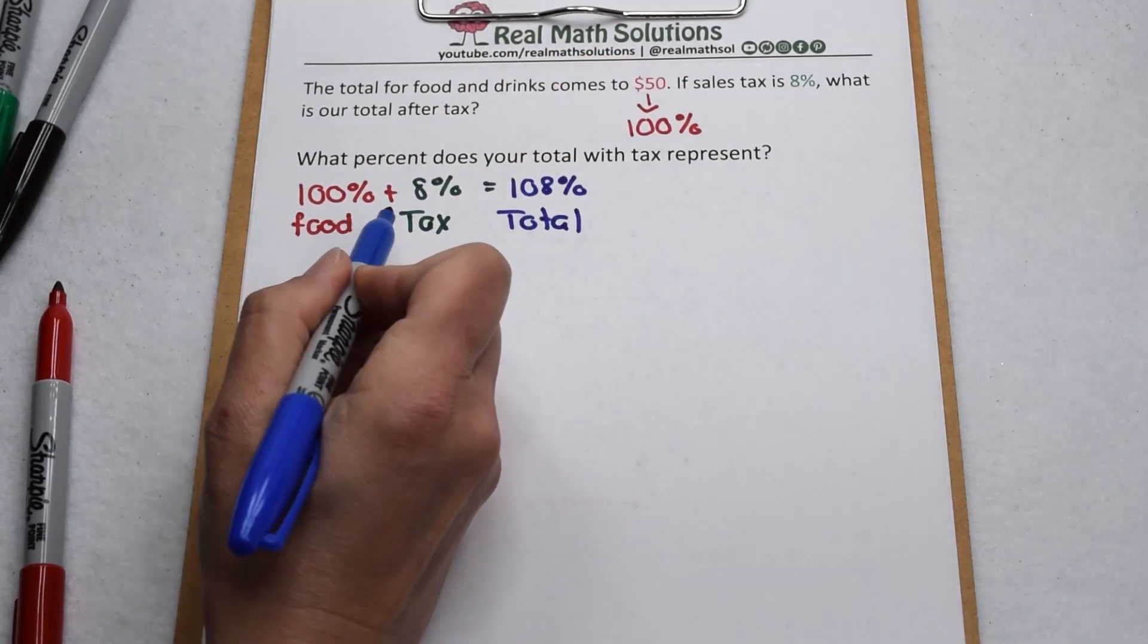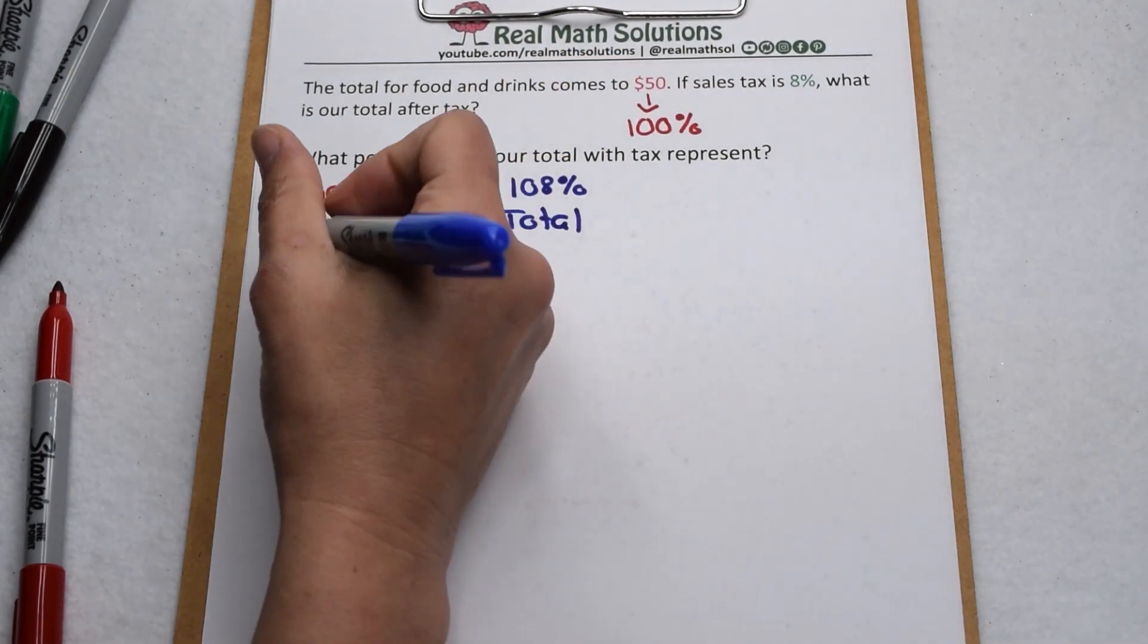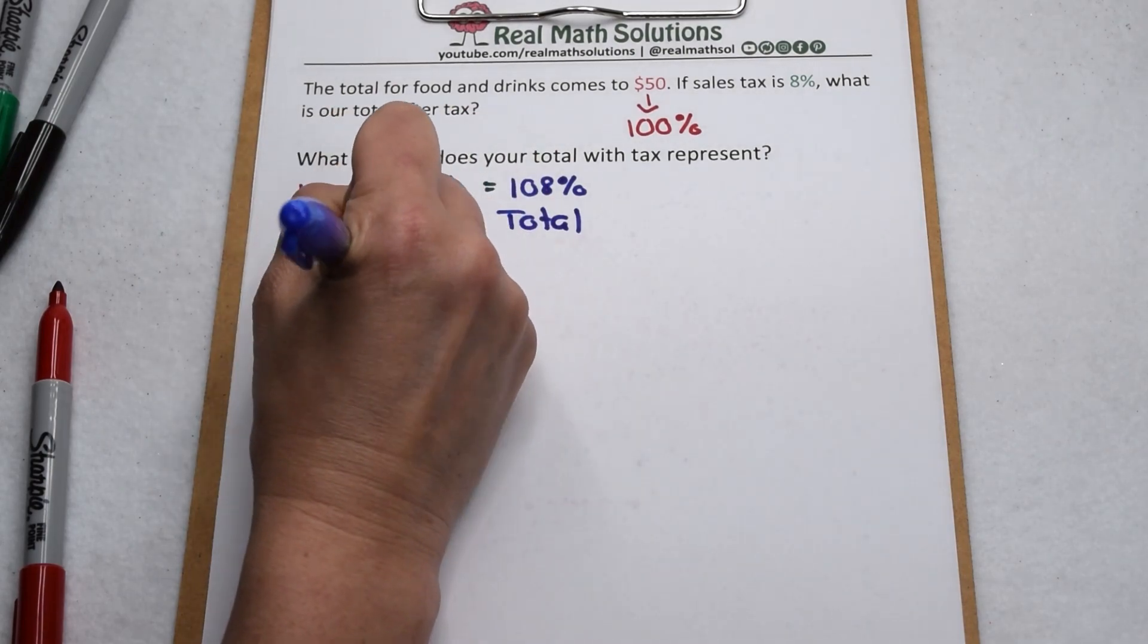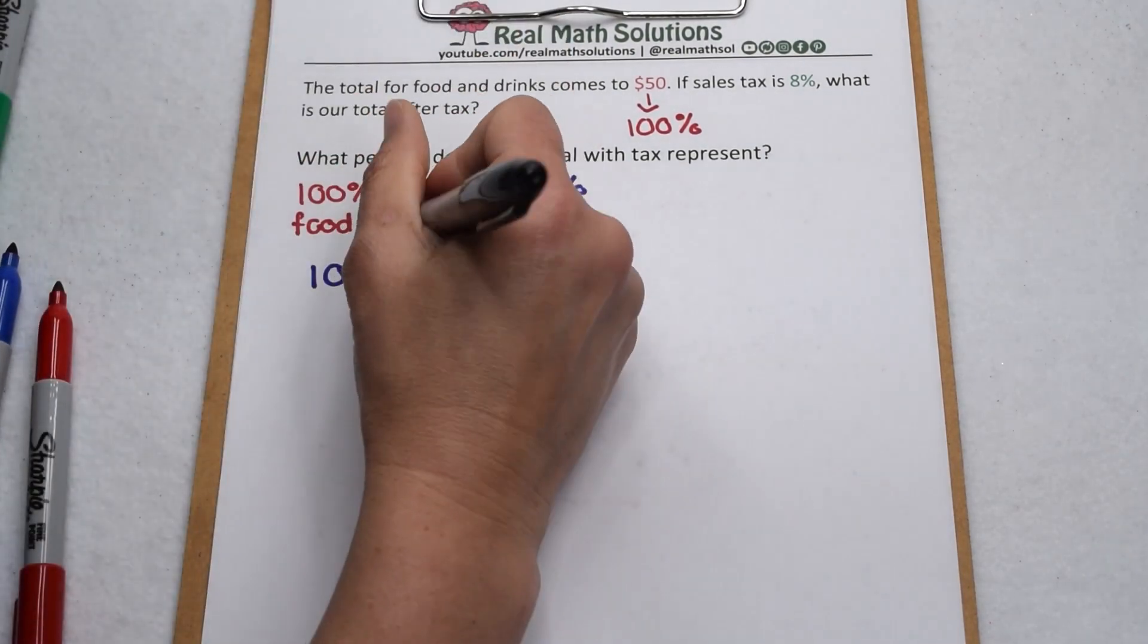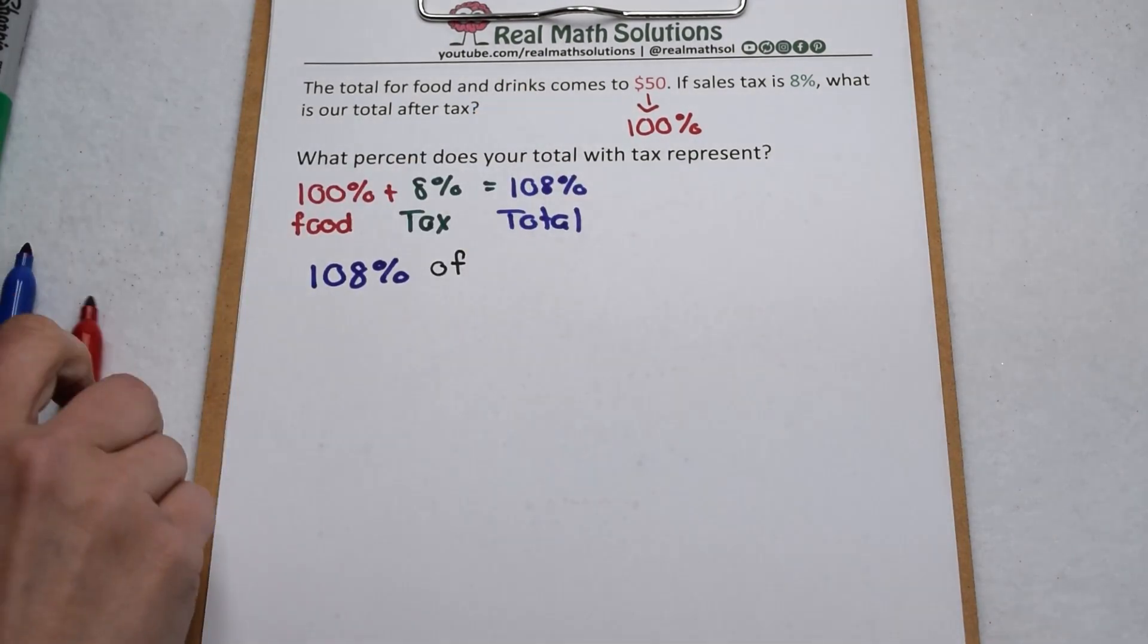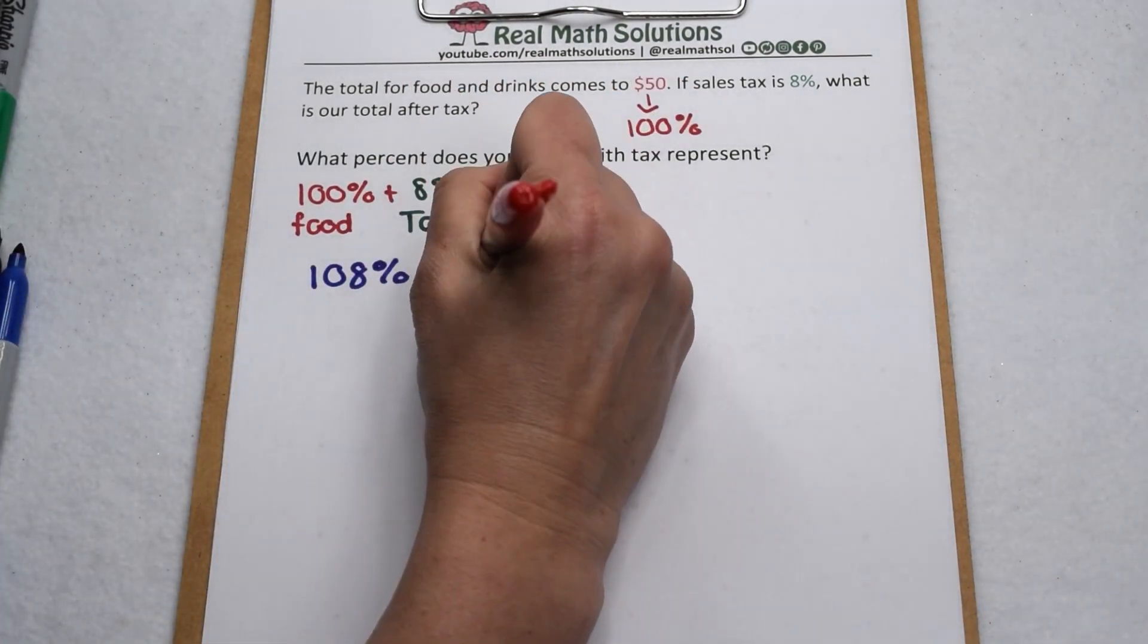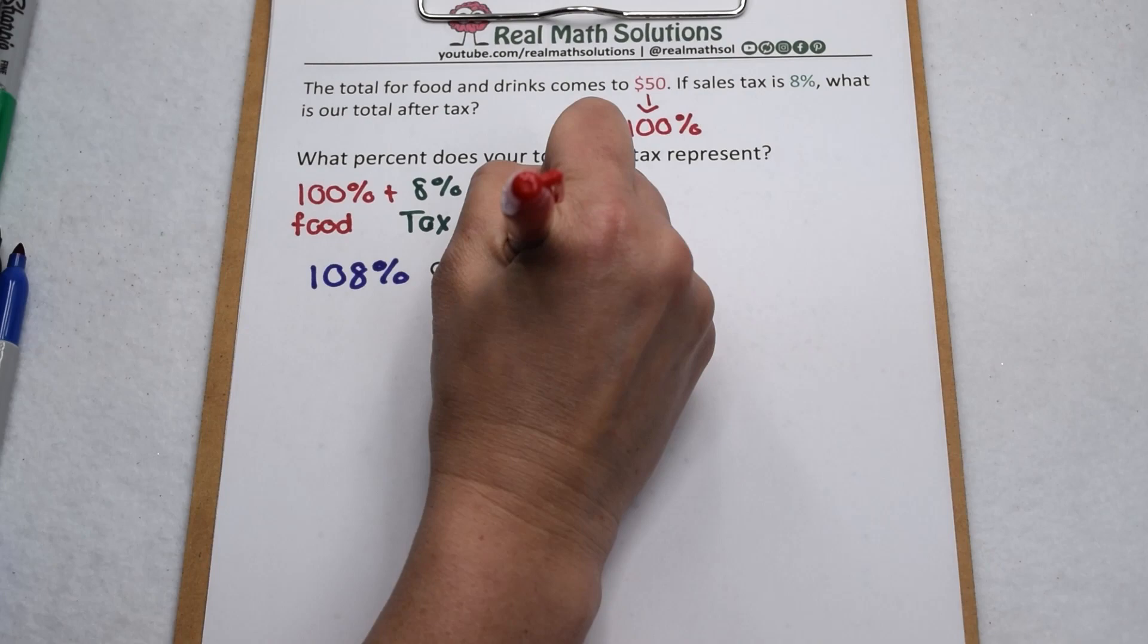100% for the food, 8% for the tax. So in order to find our grand total, we're looking for 108% of what we spent there, or 108% of our $50.